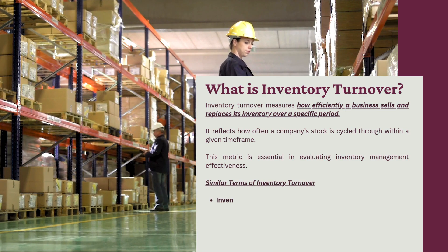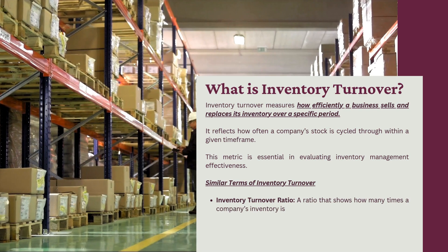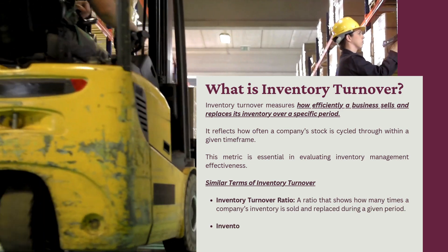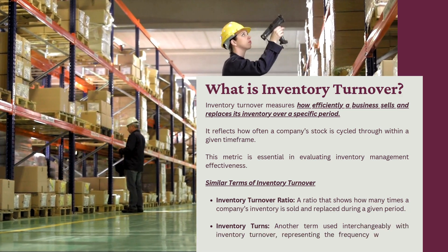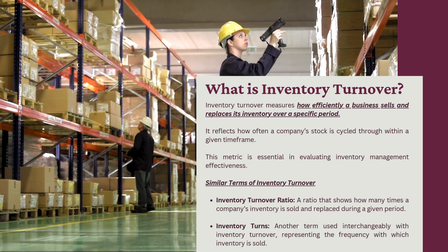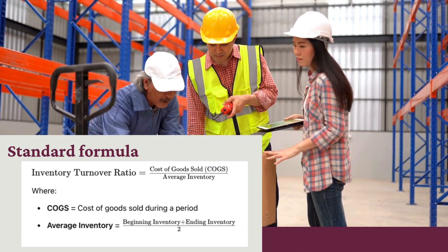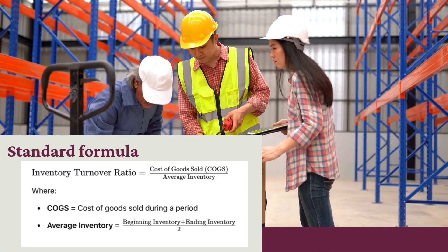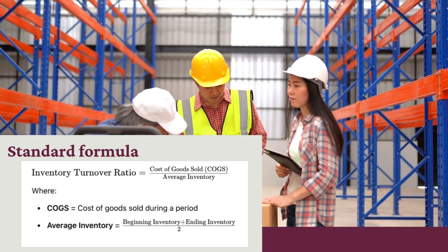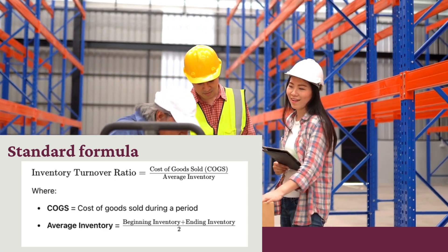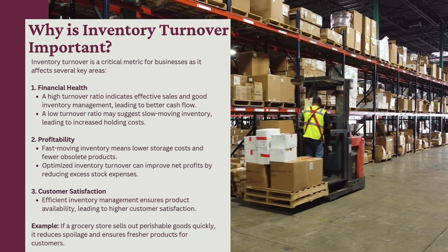Similar terms for inventory turnover: Inventory turnover ratio — a ratio that shows how many times a company's inventory is sold and replaced during a given period. Inventory turns — another term used interchangeably with inventory turnover, representing the frequency with which inventory is sold. The standard formula is: Inventory Turnover Ratio = COGS / Average Inventory, where Average Inventory = (Beginning Inventory + Ending Inventory) / 2.